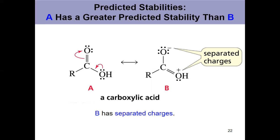Because all resonance contributors aren't created equally — they don't all contribute equally to the hybrid overall. If we look at a carboxylic acid, this is how we traditionally draw a carboxylic acid, and this is the more stable resonance contributor. But we can shift a lone pair of electrons over in this pi bond up to get another resonance contributor, compound B. Keep in mind, neither of these resonance contributors actually exists. What actually exists is the resonance hybrid somewhere in between the two.